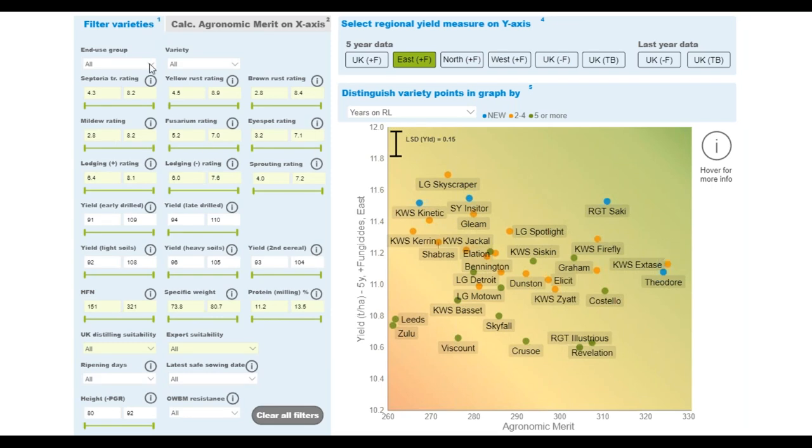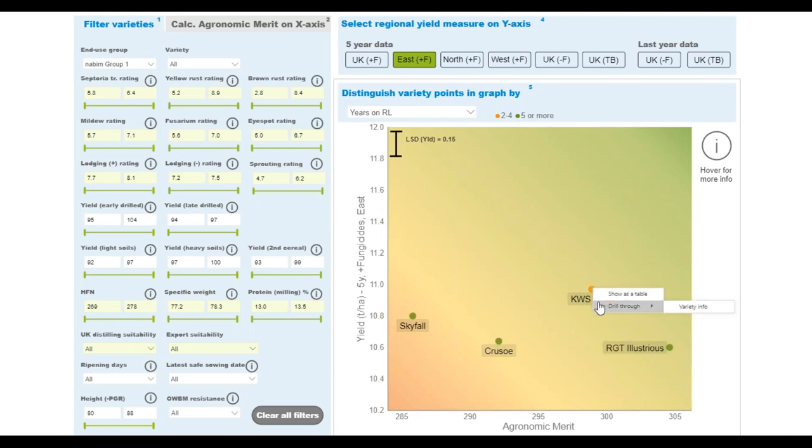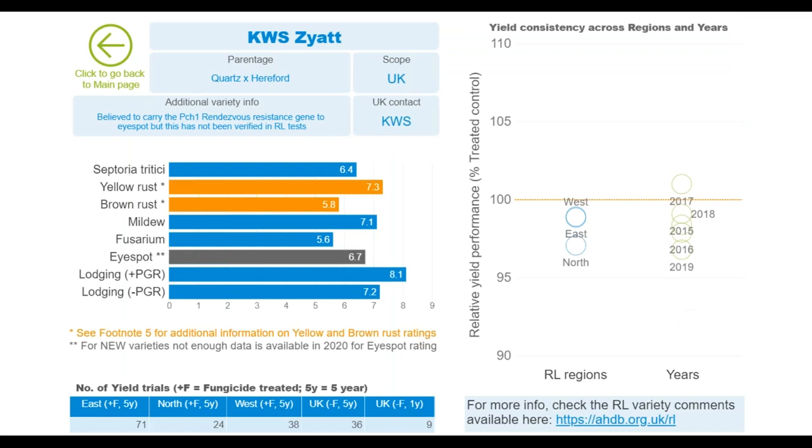That is agronomic merit. I'm going to go back to the filter panel now. The other thing to say is that, if you have changed the importance, for example, here, you can simply get the regional setting by clicking one of these buttons. Let's say I change this to yellow rust rating. If I click this button again, then it goes back to that setting. I just wanted to show one more level of interactivity.